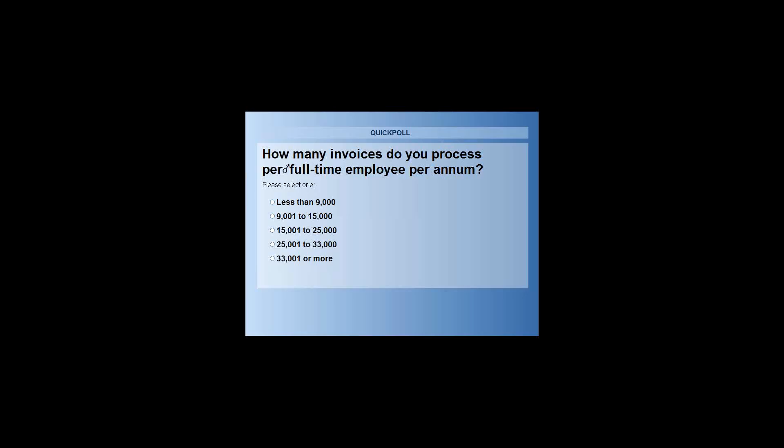How many invoices do you process per full-time employee per annum? When we sent you the homework, we asked you to take all the people in your AP function — not just the key processors — to use in the calculation. Is it less than 9,000 per annum per FTE? 9,000 to 15,000? 15,000 to 25,000? 25,000 to 33,000? Or 33,000 or more?